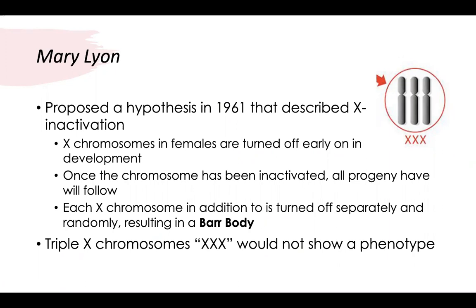Once they have been inactivated, the X chromosomes are known as a Barr body. For example, if you have three X chromosomes (XXX), this would not show any different phenotype — in other words, the females would not look any differently. Because Barr bodies only affect the X chromosomes, it is known as an X-linked trait.